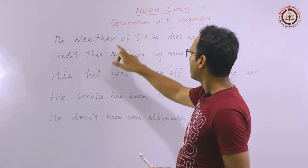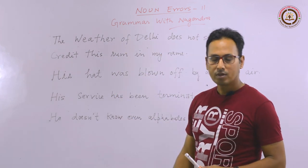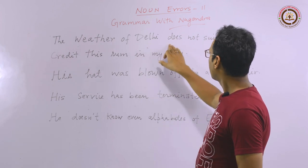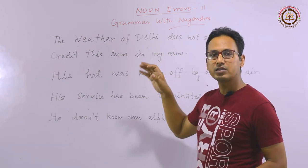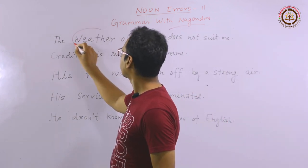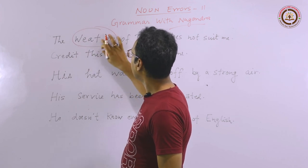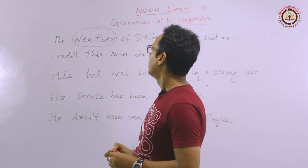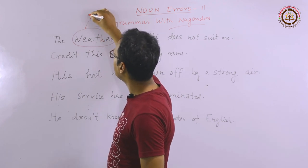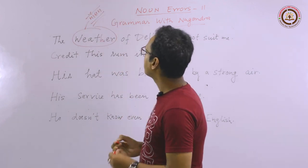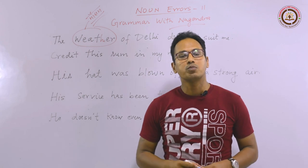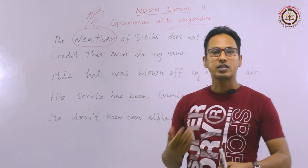The first noun error: the sentence is 'The weather of Delhi does not suit me.' This is a sentence where we think the whole sentence is correct. In Hindi we call this 'mausam.' When we focus on this word, actually the error is in the word 'weather.' If we talk about mausam, it keeps on changing — it keeps changing continuously.